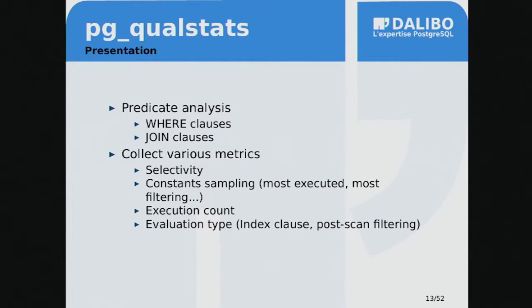A question from the audience: how does this differ from the statistical sampling in PostgreSQL's built-in statistics? The answer is that this is done at the query execution level, not by analyzing the data. It's statistics gathered from query executions, just like pg_stat_statements but at a deeper level. For each predicate, we also record how many times it was executed and what type of evaluation it was — whether it was evaluated as part of an index scan or during a sequential scan.